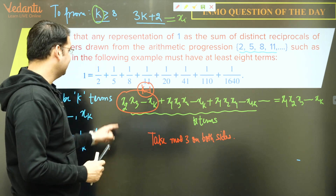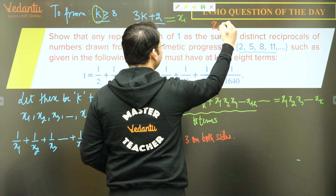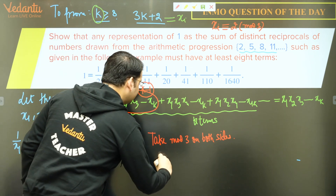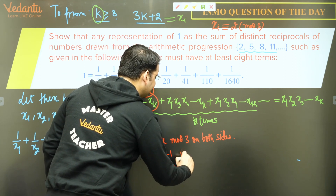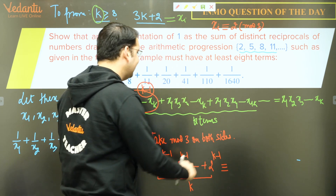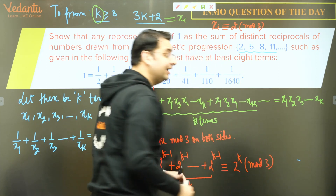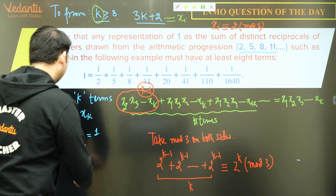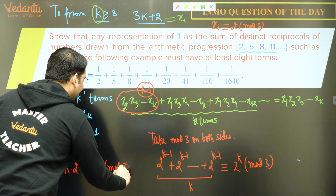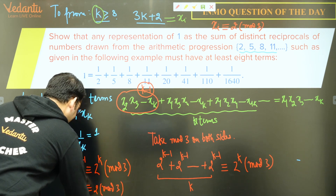Now, if we take mod 3 on both sides: every xi is 2 mod 3. So each product of k−1 terms on the left gives 2^(k−1) mod 3. There are k such terms, so the left side becomes k · 2^(k−1) mod 3. The right side is the product of all k terms, giving 2^k mod 3. So we have k · 2^(k−1) ≡ 2^k (mod 3).